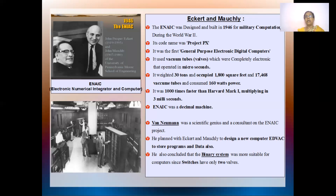Compared to Harvard Mark 1 which took three seconds, here it was in microseconds that any work was done, because it was working on electricity. The weight of this computer was quite big — it was 30 tons and it occupied around 1,800 square feet, with 17,468 vacuum tubes. So many tubes were there for it to work, and it consumed 160 kilowatts of power supply. It was 1,000 times faster than Harvard Mark 1.